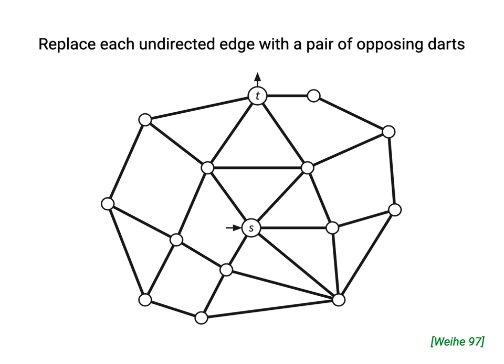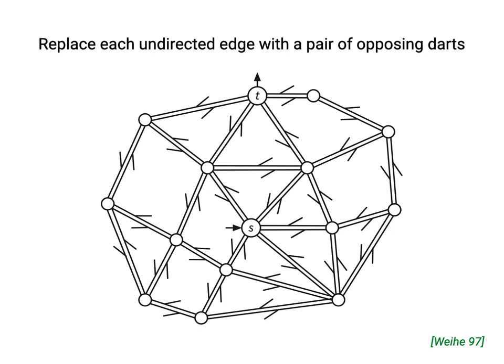So, I'll replace every undirected edge in this graph with a pair of directed edges or darts. From a data structure's point of view, this is a no-op. The adjacency list data structure that represents your graph probably already has two records for every edge, one in the adjacency list of each endpoint. So, just interpret the data structure as being a directed graph.